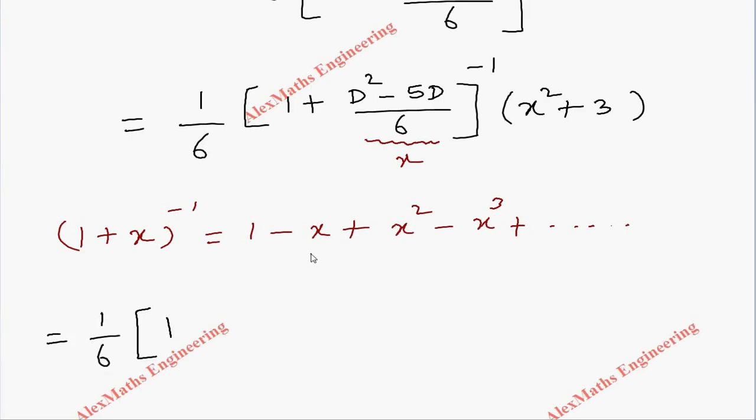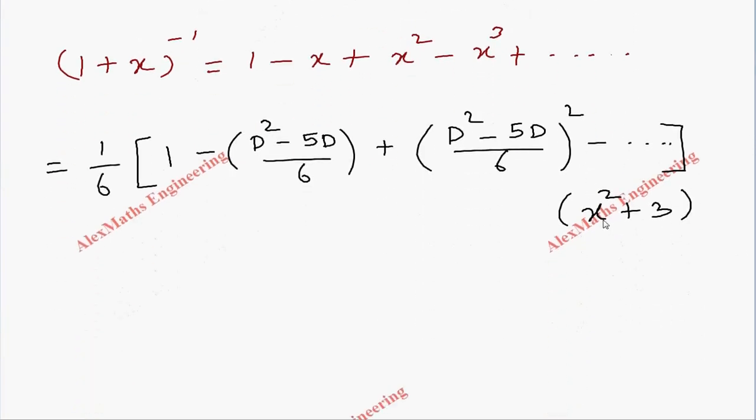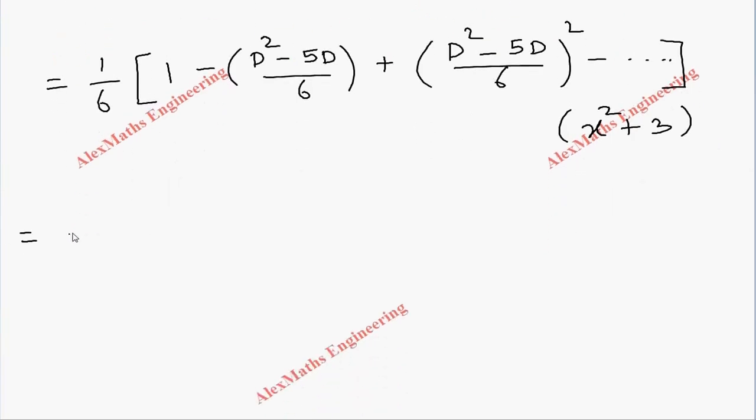1 - x means minus of (D² - 5D)/6, then plus x² that will give us [(D² - 5D)/6]². Higher powers we can ignore, then bracket close times (x² + 3). Because D stands for differentiation and we have x² here, only two times we can differentiate, so except D² all the other higher powers we can ignore.